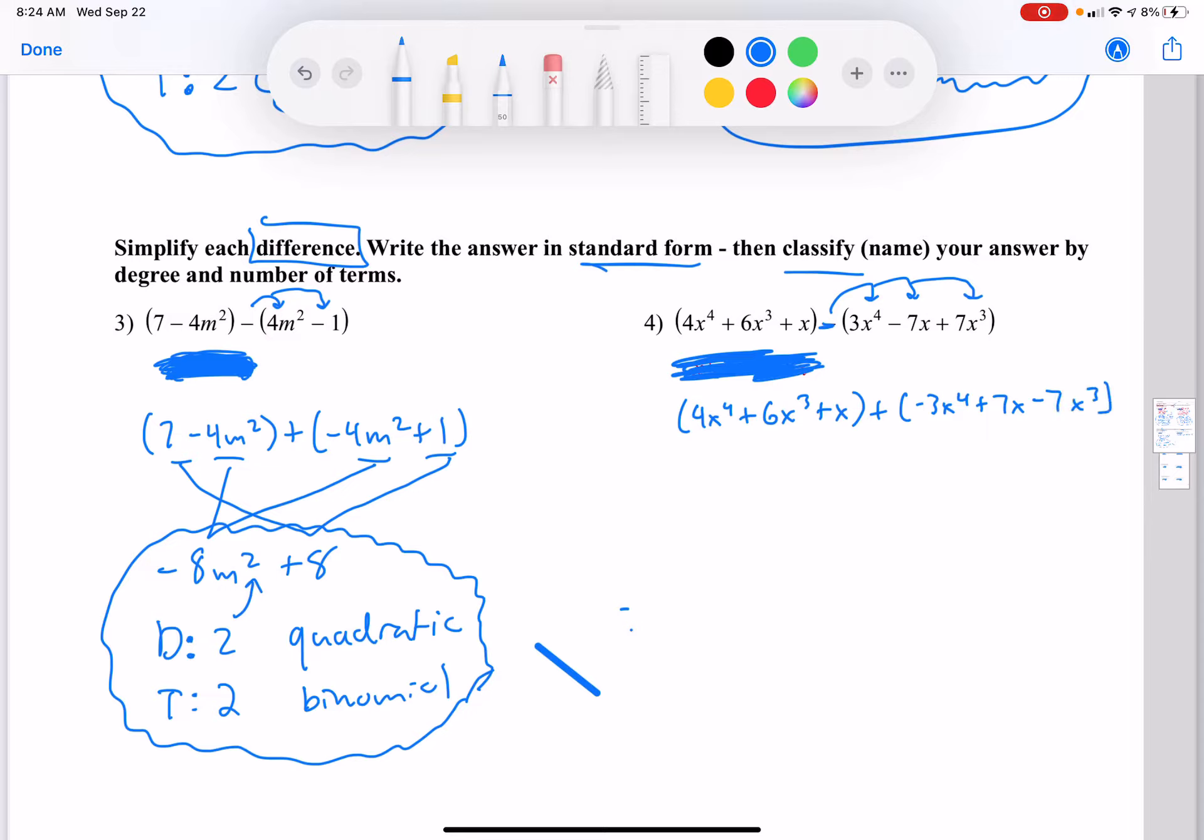So now we're going to combine 4x to the 4th power first. That's just 1x to the 4th power. 6x cubed, that's negative 1x cubed. 1x with 7x, that's 8x.